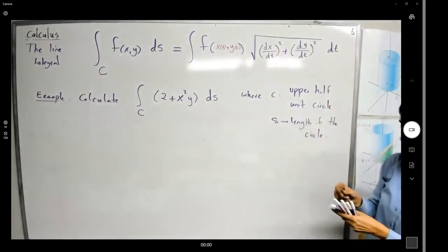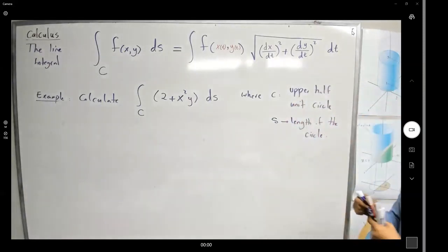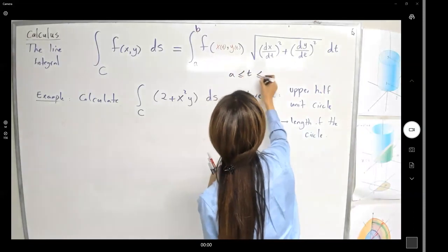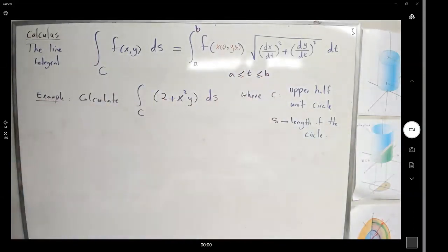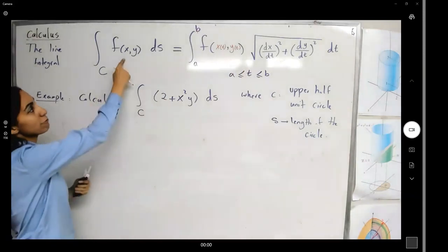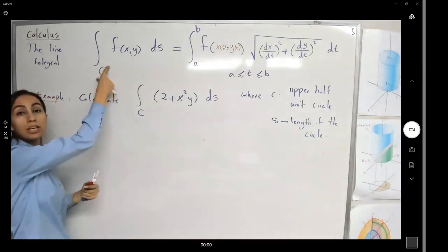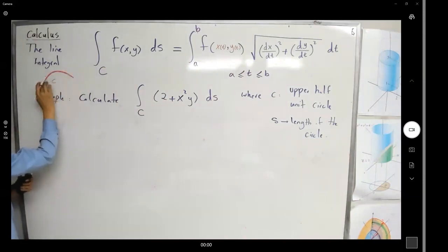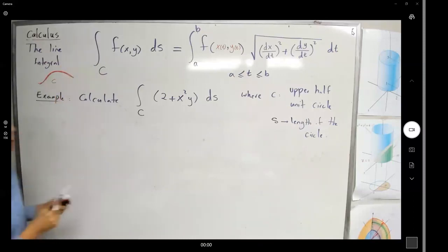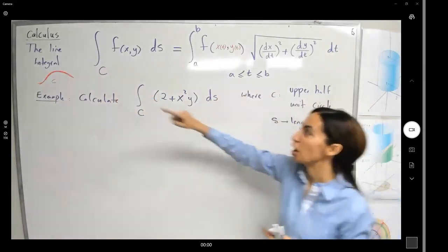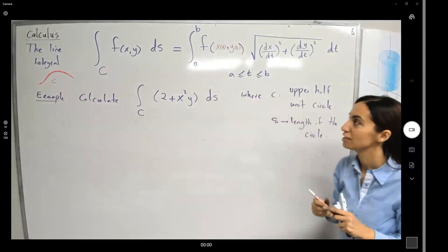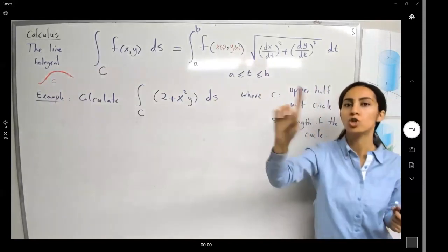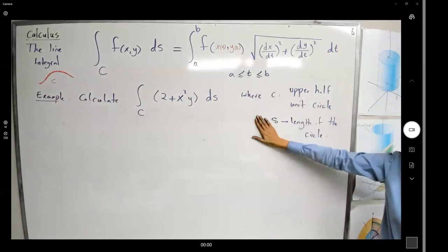So we define x and y in terms of a third variable t, and t is bounded between two values. I have a function in x and y and I have a curve. To find the line integral of this function over this curve, we're going to define x and y in terms of a third variable t. This is the formula, and this is the example that we have.